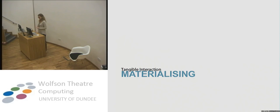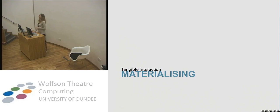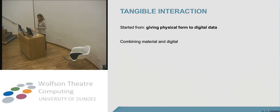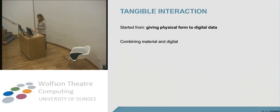As part of my design research programme, one of the words is 'materialising.' Before I explain it, let me ask: is anyone familiar with the field of tangible interaction? Tangible interaction basically started from giving a physical form to digital data. You have digital information in your computers and screens that is usually invisible — there's no physical component to it. Tangible interaction started from: how do we make a link to the physical world? You basically combine the material and the digital.